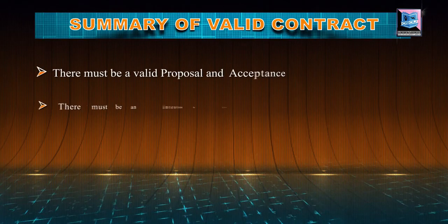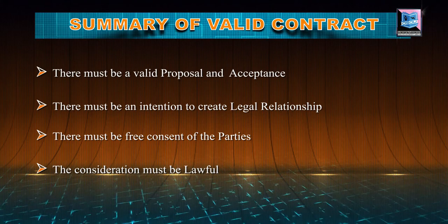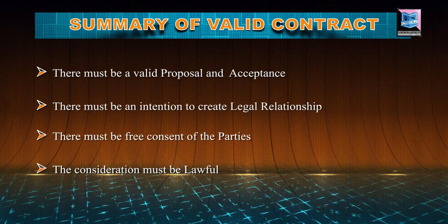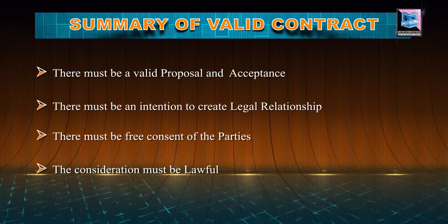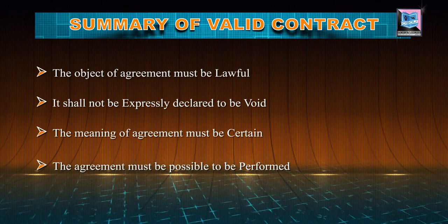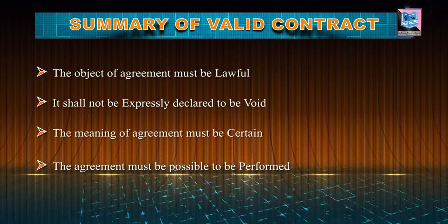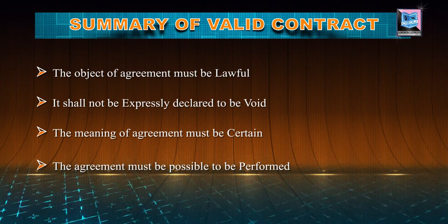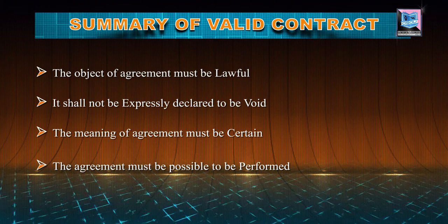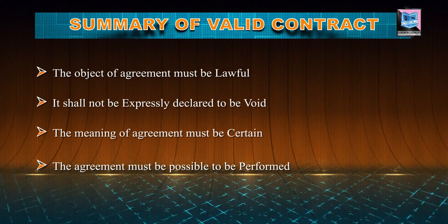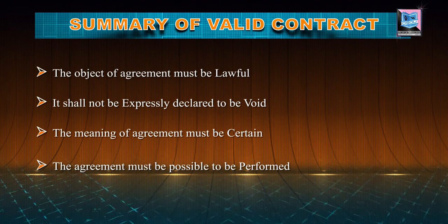Coming to the next, there must be free consent of the parties. We will discuss in detail what is the free consent of the parties and how the free consent is obtained. The next one is the consideration must be lawful. The lawful consideration is required to form a valid contract. The next is the object of agreement must be lawful — when the consideration is lawful, it must be followed by the object. Object is an important criteria of a contract. Followed by it, the agreement shall not be expressly declared to be void. When law expressly declares certain kinds of agreements as void, definitely these kinds of agreements cannot become a contract. The meaning of the agreement must be certain — many a time, the meaning of terms agreed between the parties are not certain, and in this case that agreement cannot become a contract.